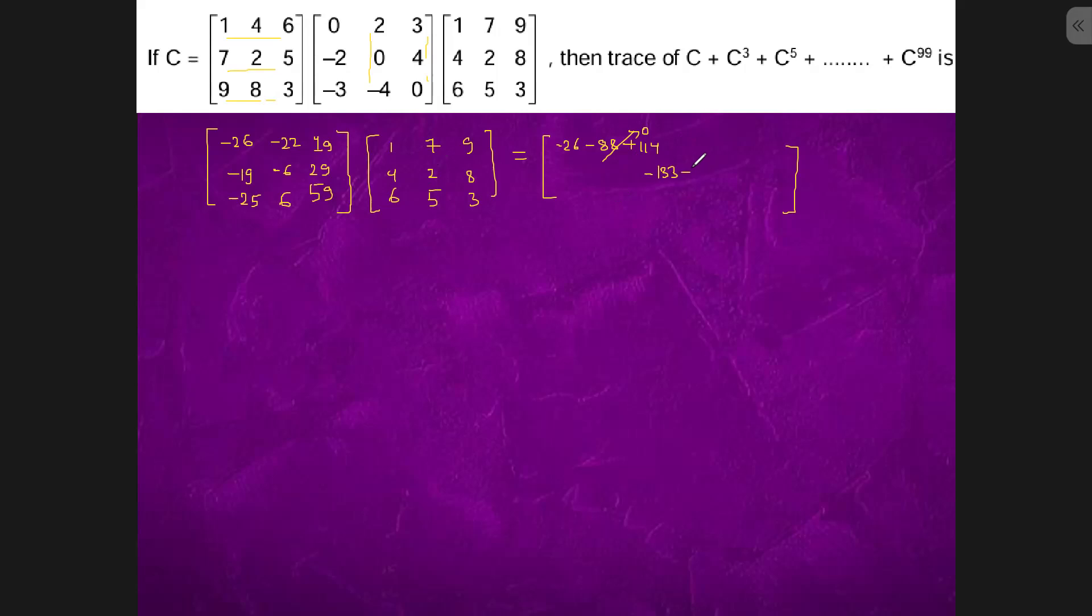6 into 2 is minus 12. 29 into 5 is what? So this will come out to be 0. 25 into 9 is minus 225. 6 into 8 equals 48. 59 into 3